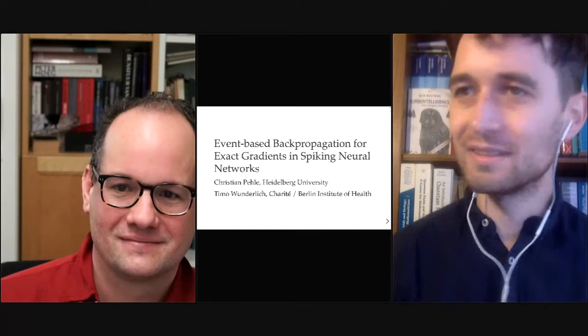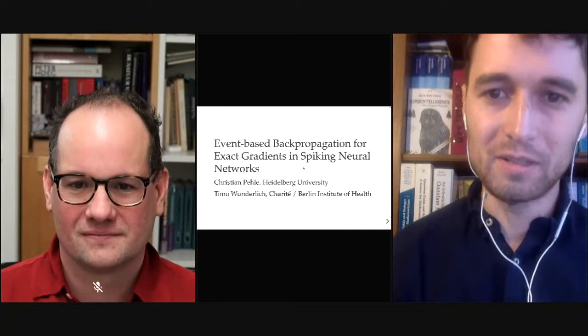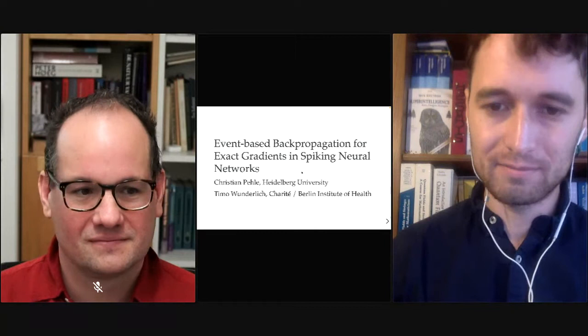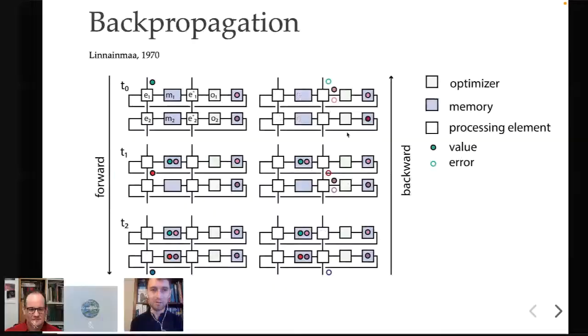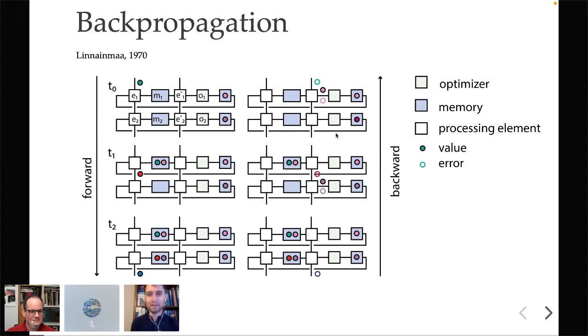Thanks, and thank you to the organizers for allowing me to speak. I will be talking about event-based backpropagation in spiking neural networks. But before I do that, let me briefly remind you about backpropagation, which I assume everyone is familiar with. Backpropagation is the algorithm that really fuels the current deep learning revolution — all these advances in image classification, vision processing, natural language processing, and so on.